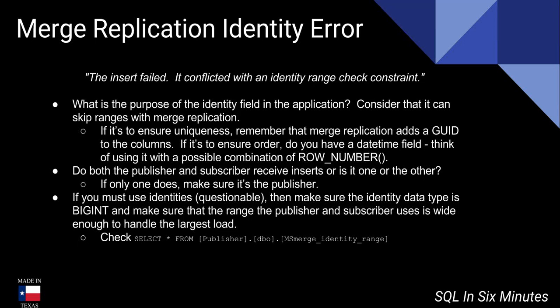A brief explanation: you are trying to make an insert into the subscriber, and the identity range that the publisher allows for is not large enough to handle the insert. So let's say the identity range for the publisher is 10,000 — which is the default — and the identity range for the subscriber is 1,000, which is also the default. What happens if you have an insert of 6,000 or 7,000 records? You're going to get this error because you just exceeded that identity range.